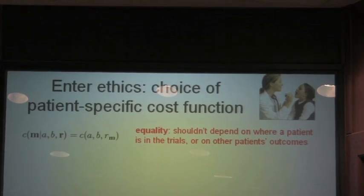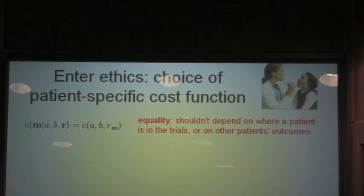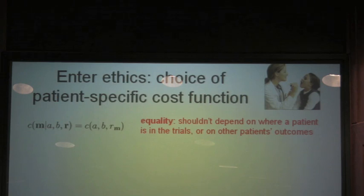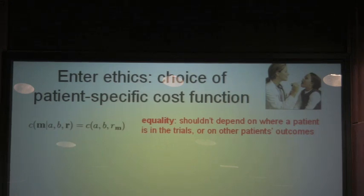A principle that I'll call here equality, that the cost that we assign to a patient shouldn't depend explicitly on where they are in the study. Now, it will depend implicitly on that through the strategy. But, we should never say, because your patient number is a prime number, we're always going to assign you to the red study. That would be an example of an explicit dependence on M. And we're going to say that shouldn't happen. And so, that says that the cost function has to have this form instead of this more general form.